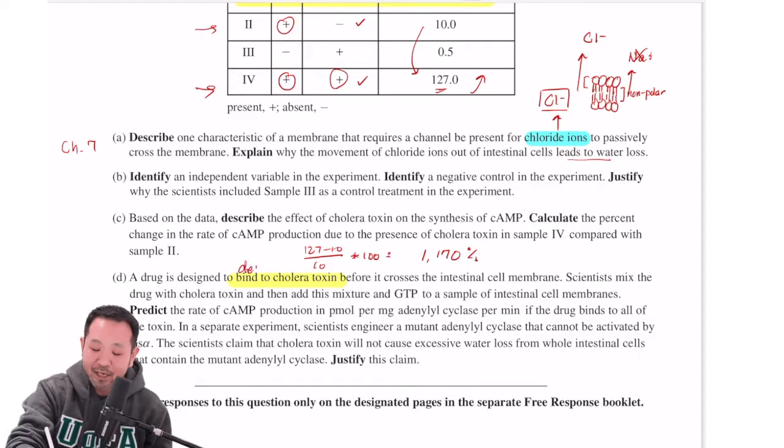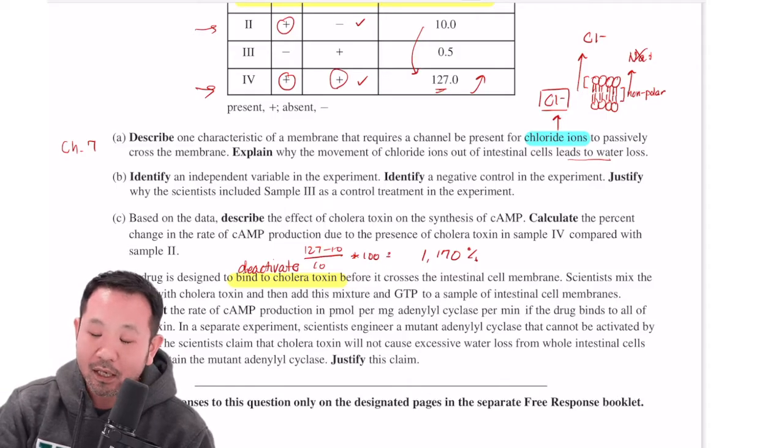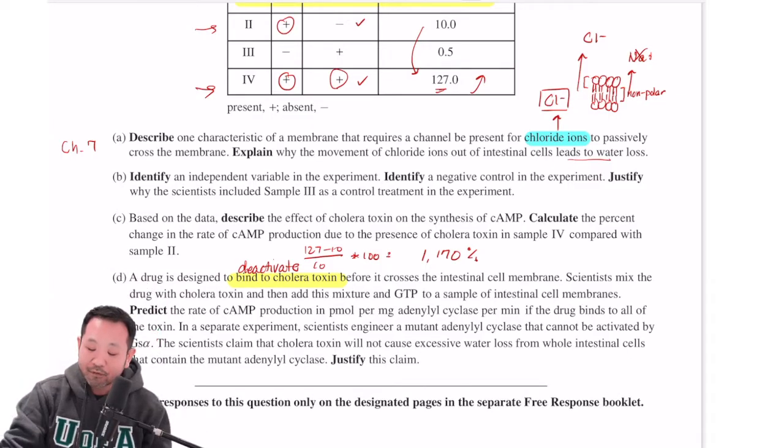So far we have this description that a drug is able to bind to the cholera toxin. Now, when I hear this binding, to me, this means deactivating. Because remember that when something binds to a substance, it no longer has the same structure, therefore, it probably impacts its function. Now, it says predict the rate of cyclic AMP production in picomoles per milligram adenocytate per minute if the drug binds to all of the toxin.